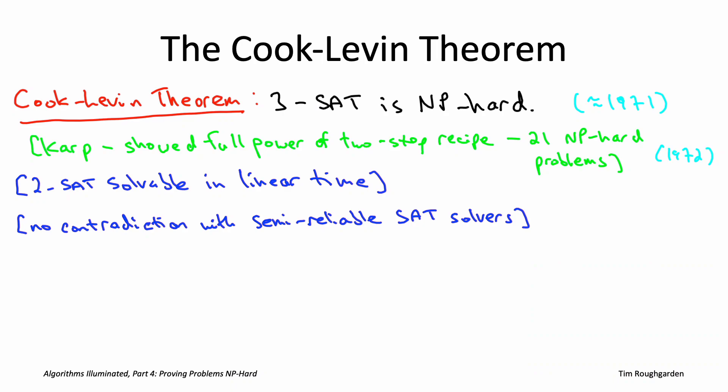In this chapter, we're not going to worry about why the Cook-Levin theorem is true or its proof. We're just going to take it on faith. The plan is to stand on the shoulders of these giants and assuming 3-SAT is NP-hard, generate via reductions 18 additional NP-hard problems.